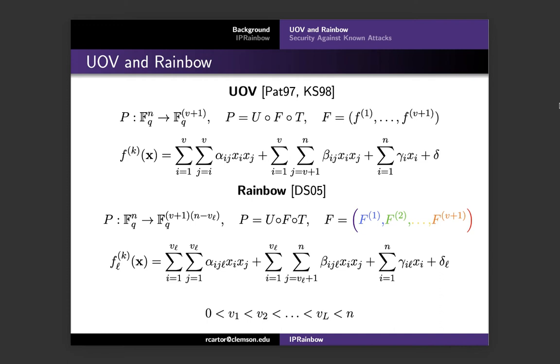To invert the central map, we choose values for the first layer vinegar variables, which are the variables x1 through xV sub 1. And then we substitute these values into the first layer maps, which are the polynomials little f1 through fO sub 1. Then we solve the resulting linear system in the first layer oil variables, which would be xV sub 1 plus 1 through xV2. Next, we substitute these values of the variables into the central maps, which would be fV plus 1 through fn. And solve similarly for the remaining variables, which would be xV2 plus 1 through xn.